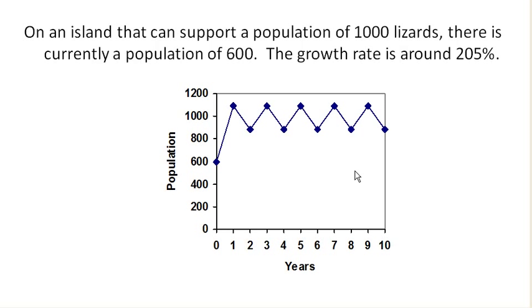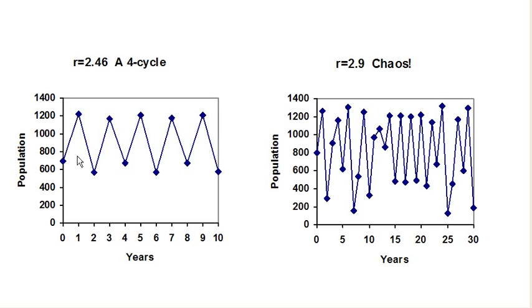Interestingly, you can even take this further. If the growth rate gets larger, you can start seeing things like a stable four cycle, where the population is bouncing around between four different values. Or if the growth rate gets even larger, then you can get what's called chaos.